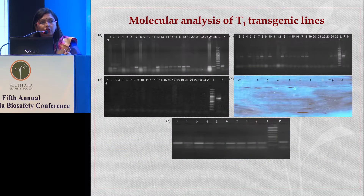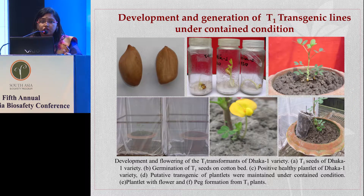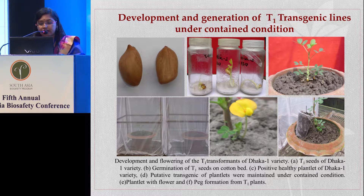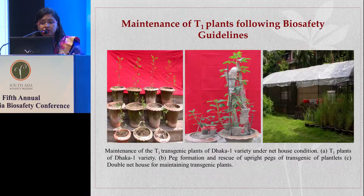We have done the molecular analysis for the T1 transgenic lines and confirmed several transgenic lines for the peanut variety. As per biosafety guidelines, it is very important to develop and generate the transgenic lines under contained conditions. We have followed the biosafety guidelines throughout our research and are now maintaining our T1 generations under contained conditions in a double-layered net house, as shown here.